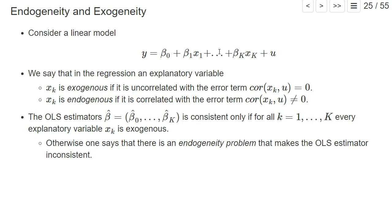Note that whether we have an endogeneity problem depends on what the beta coefficients are meant to represent, because the meaning of beta also influences the meaning of u — since u is given by y minus beta_0 minus beta_1 and so on. For example, if the betas are defined as the coefficients of the best linear predictor, then the error term is always uncorrelated with all the x_k's, so all explanatory variables are always exogenous by definition.